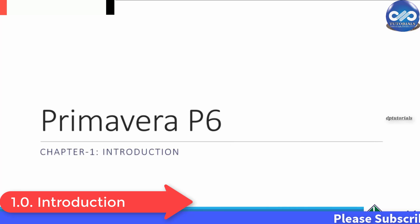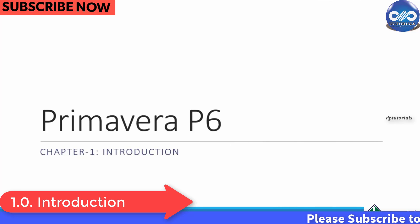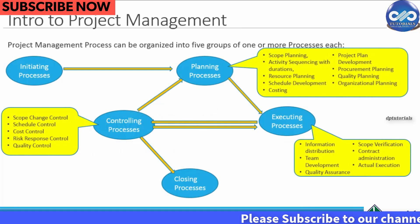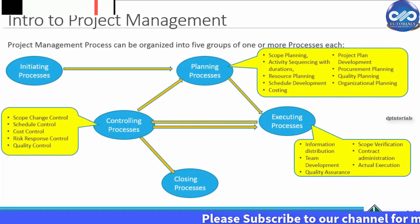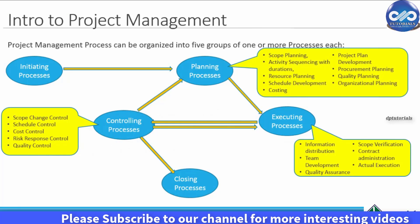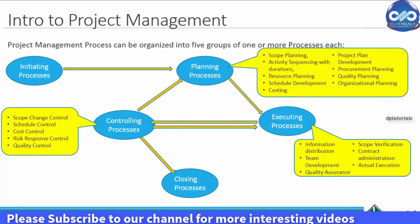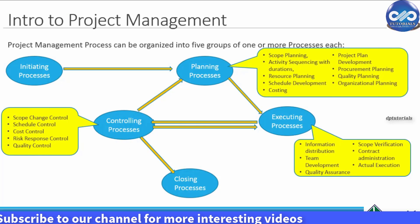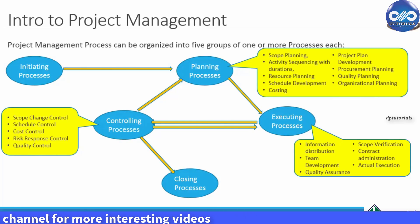Project management life cycle includes 5 phases: Initiation, Planning, Execution, Controlling and Monitoring, and then Closing.